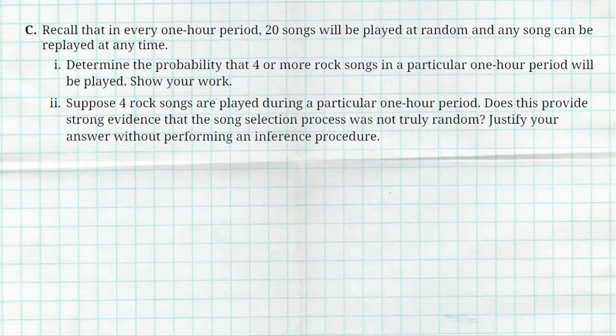Question C says, recall that in every one-hour period, 20 songs will be played at random. And again, any song can be replayed. Determine the probability that four or more rock songs in a particular one-hour period will be played. Now, four or more means four, five, six, seven, eight, nine, 19 or 20. That's a lot of work for me to show.